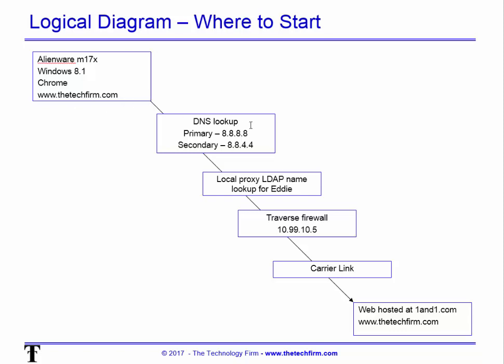The first step is a DNS lookup — in this example, using Google's public DNS as primary and secondary. Then since the browser uses a proxy configured with a name — the proxy server is called 'eddy' — we have to resolve that name. Then we traverse the firewall, cross the carrier link, and reach techfirm.com. That's it — that's as basic as you can start.